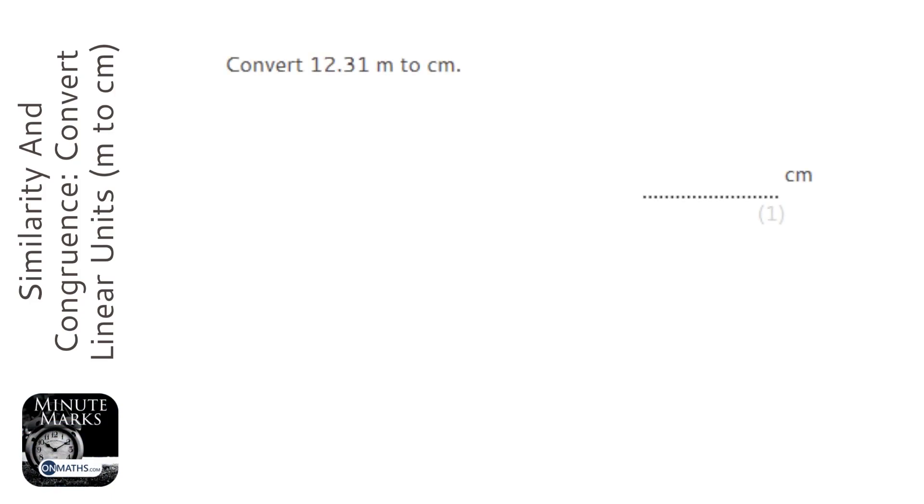Okay, so here we're given a value in meters and we're asked to convert it to centimeters. Now I know that one meter is 100 centimeters. Now if you think that it's 1000 centimeters, you're thinking of millimeters. It's 1000 millimeters but 100 centimeters.